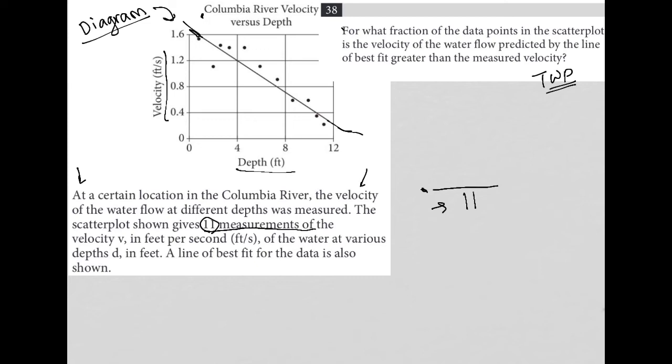Well, that happens here. That's one, two, three, four, and five. There are five data points for which the predicted value by the line of best fit is actually greater than the measured value. The line is higher than the point. So five out of 11. This is a perfectly good answer for you to fill in on your self-response.